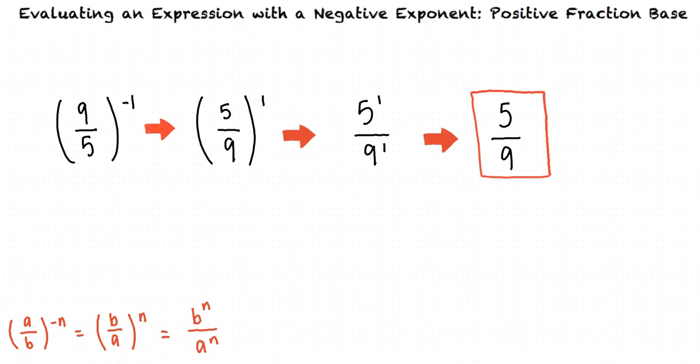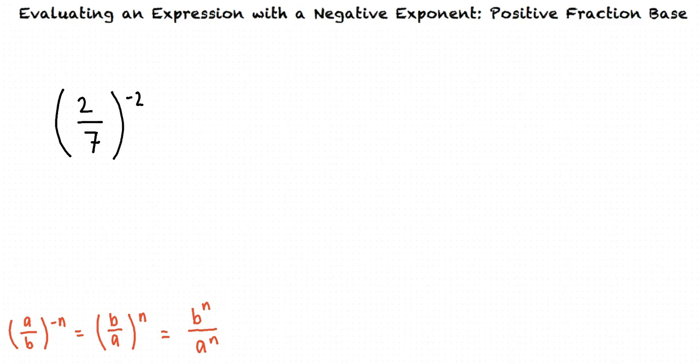Why don't we try another one? Let's rewrite the expression 2 sevenths raised to the power of negative 2 without an exponent. Where do you think we should start?